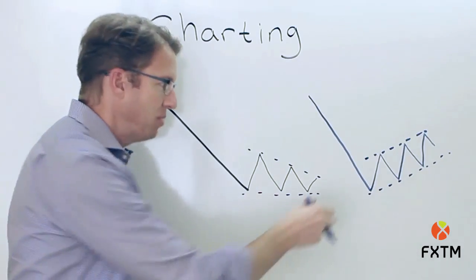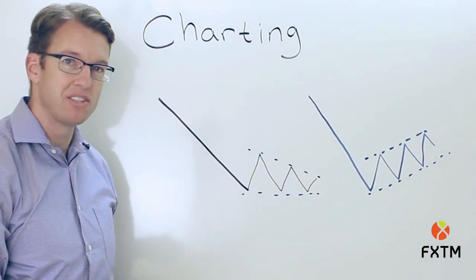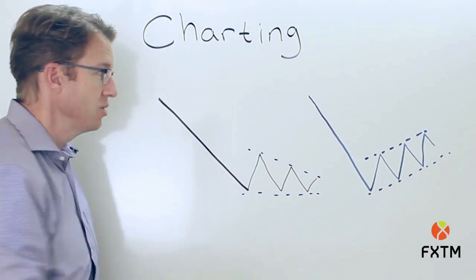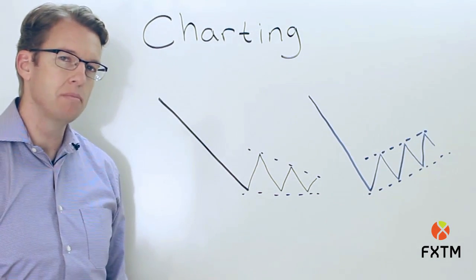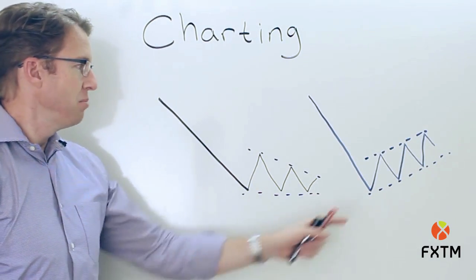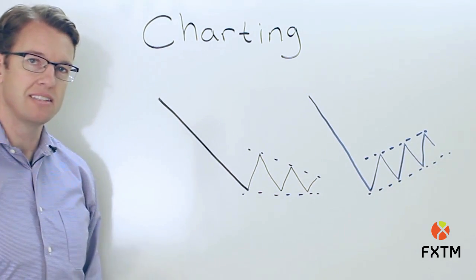The flag can be somewhat parallel support and resistance levels and kind of flat. That's okay too, but this is more or less a classic pattern here where bulls are attempting to take control of the market. But ultimately what we're looking for is a breakout to the downside.